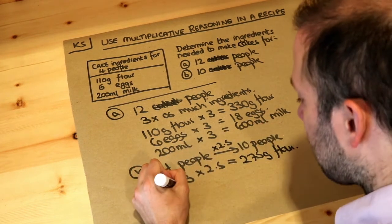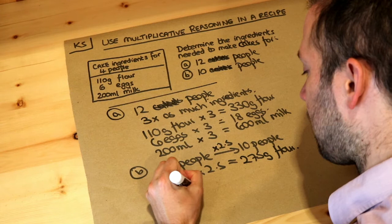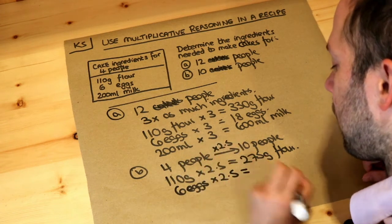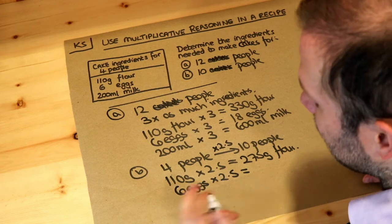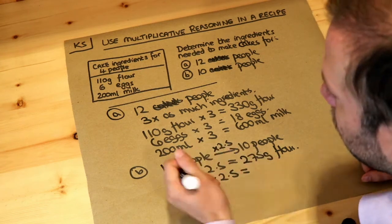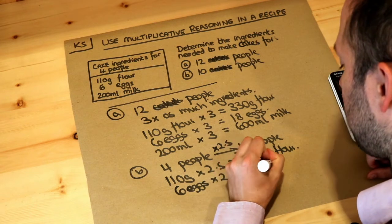What about eggs? Six eggs, if we times that by 2.5—well, two lots of six eggs is 12 eggs, and half a lot of six eggs is three eggs. 12 plus three is 15. Again, you could just use your calculator.